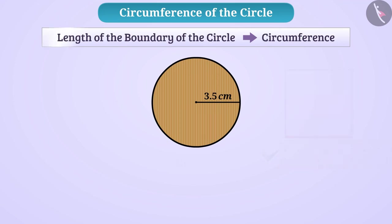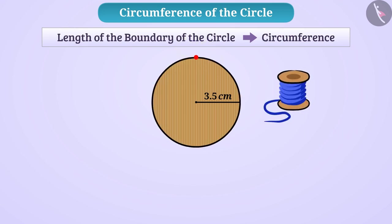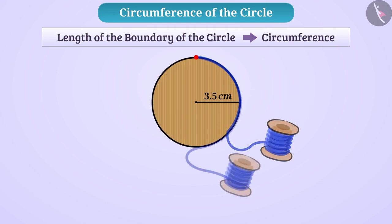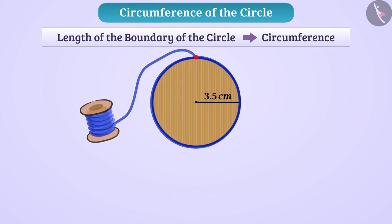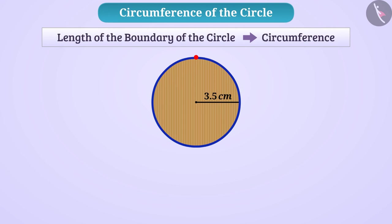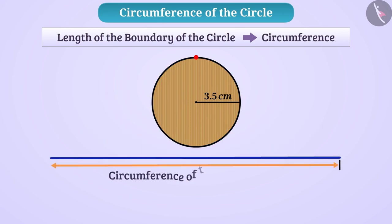To find the length of the boundary of the circle, mark a point on the boundary and place a thread on this point, then move it along the edge of the circle. The length of the thread required to reach the starting point, i.e. to make a complete round, gives us the circumference of the circle. In this case, the circumference of the circle is 22 cm.